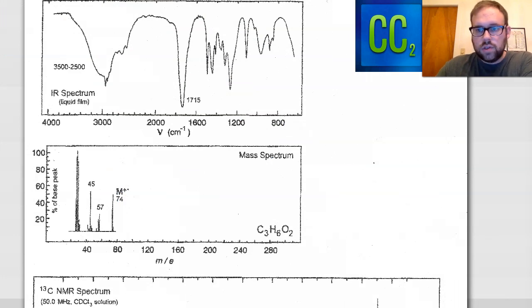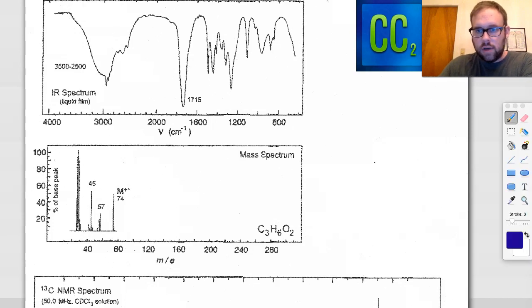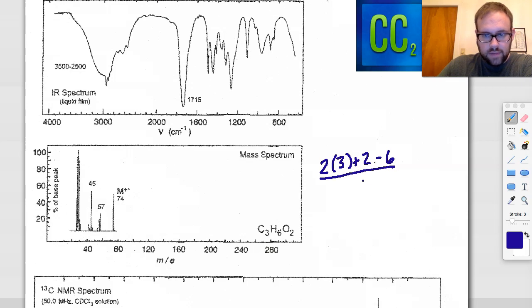To start off we want to solve our degrees of unsaturation. We have a relatively simplistic structure, C3H6O2. The degrees of unsaturation: two times the number of carbons which is three, plus two, then subtract the number of hydrogens because we ignore the oxygen. So that would be six, and all of that divided by two. Six plus two is eight, eight minus six is two, divided by two equals one degree of unsaturation.